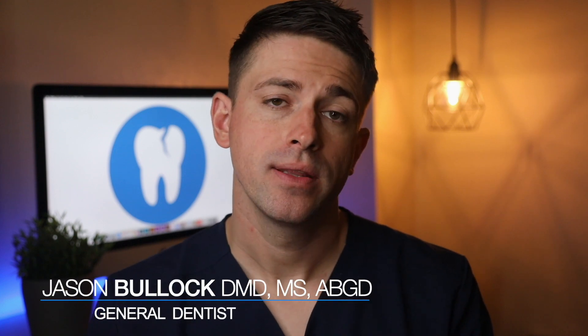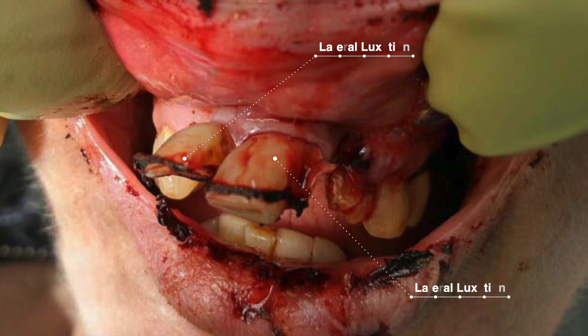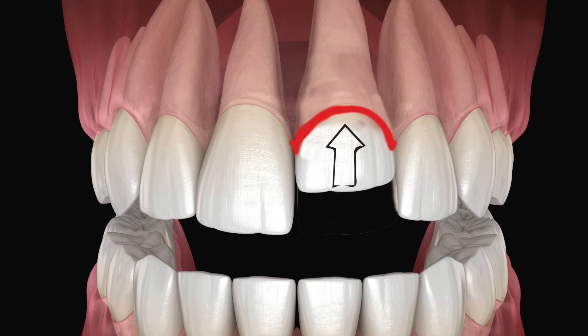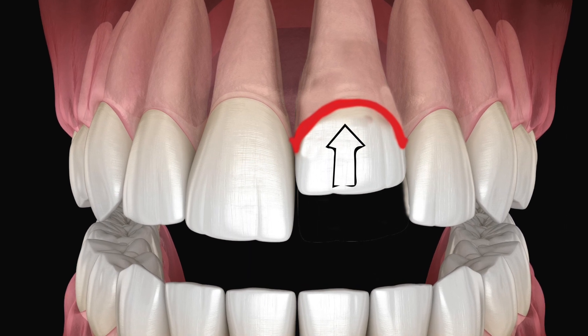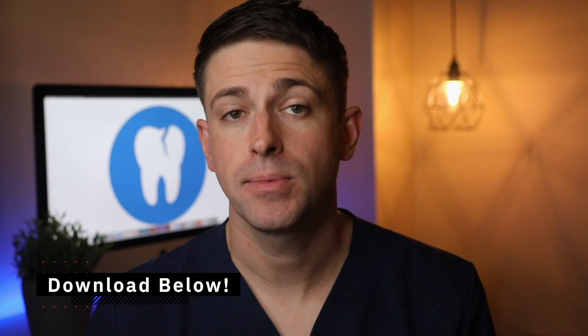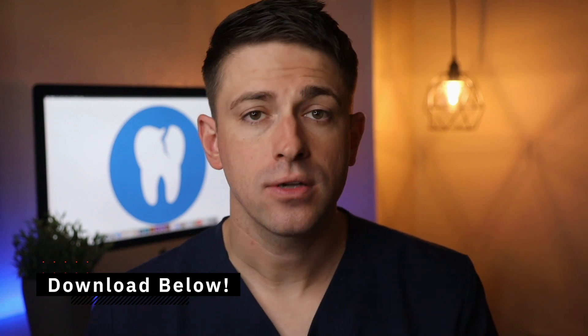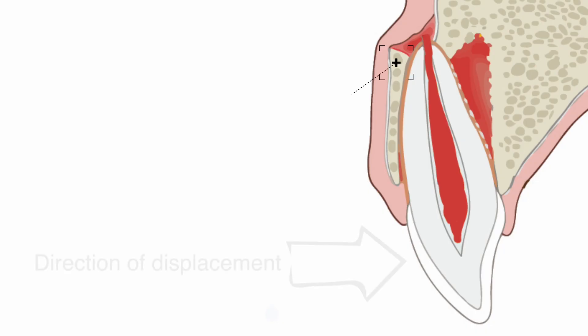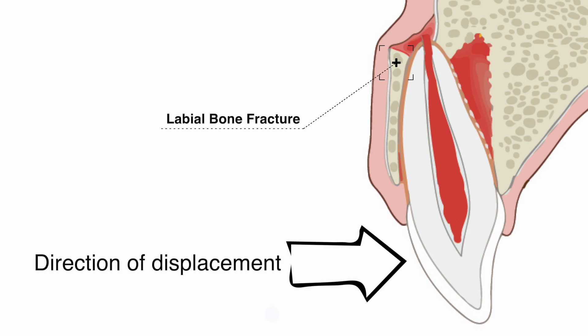The next injury we're going to look at is lateral luxation. This is when the tooth is displaced in any direction except axially — an axial displacement would indicate an intrusion or an extrusion. Since in a lateral luxation the tooth is displaced in any direction except axially, it will also cause a fracture of the labial or palatal alveolar bone.